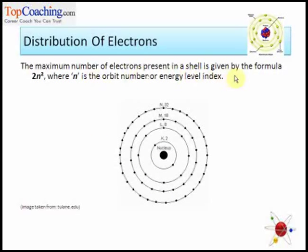Bohr said maximum number of electrons present in a shell would be given by the formula 2 into N square, where N is the orbit number or energy level. So orbit number for K is 1. It is at the first place from the nucleus. So number of electrons in K-shell would be 2 into 1 square, which is 2.